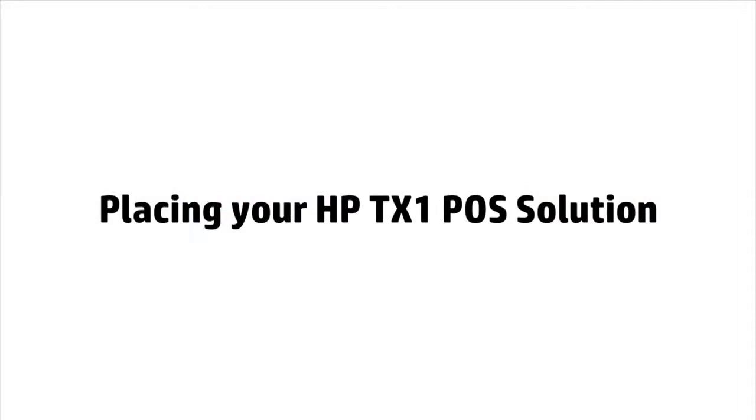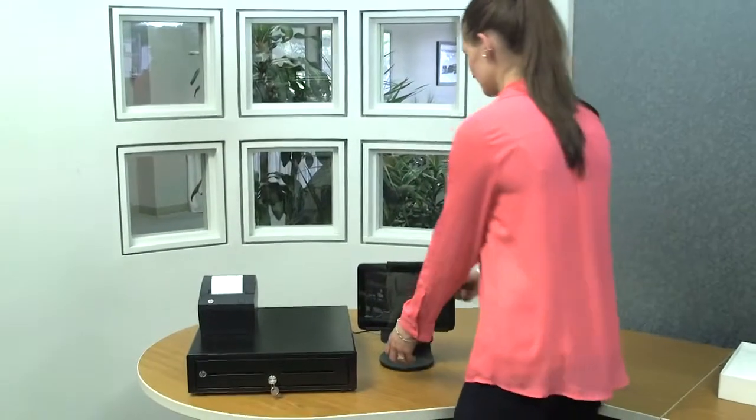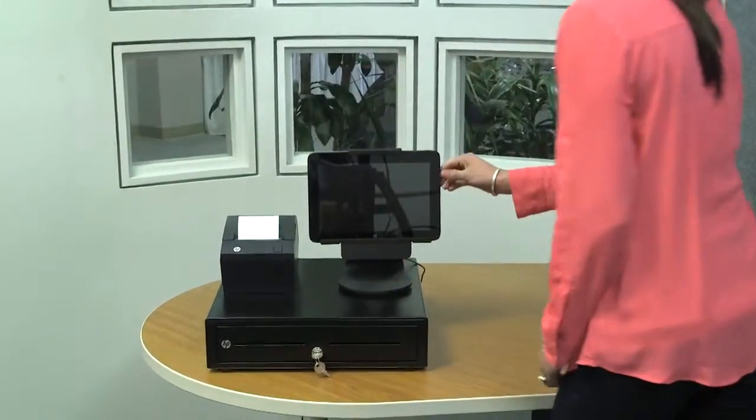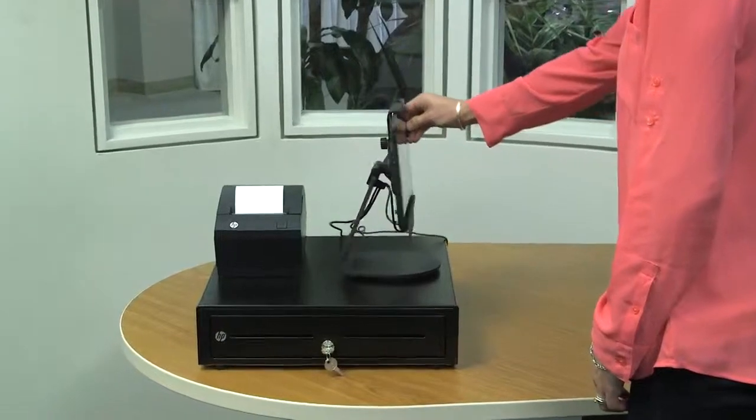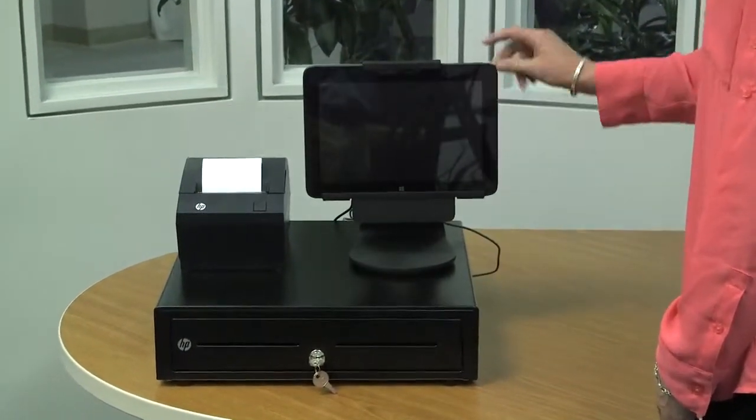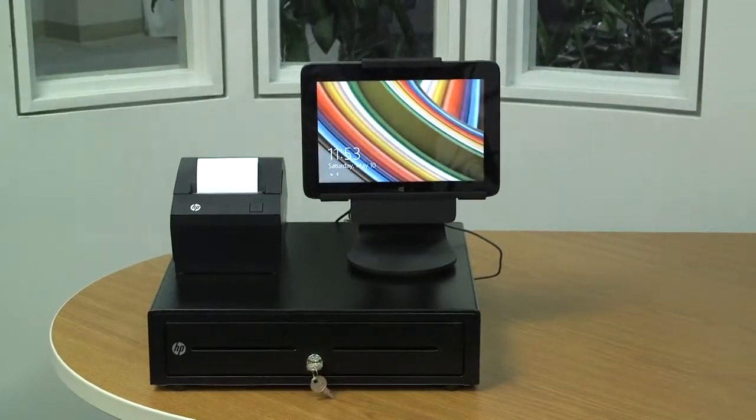Here are some options for placing your HP TX1 point of sale solution. The recommended option is to place the stand on top of your cash drawer. Since the base of the stand is magnetic, it secures tightly to the top of the cash drawer to minimize movement while in use, and makes it easy to turn the tablet to face the customer.